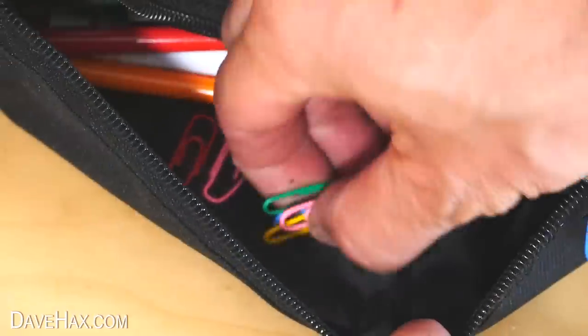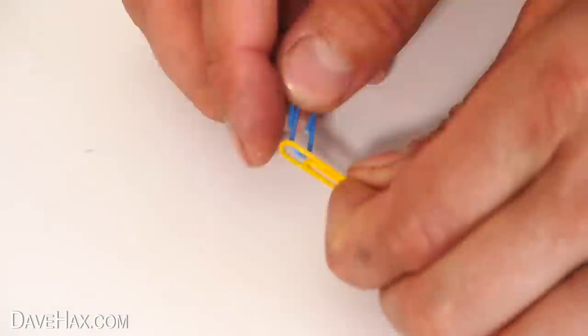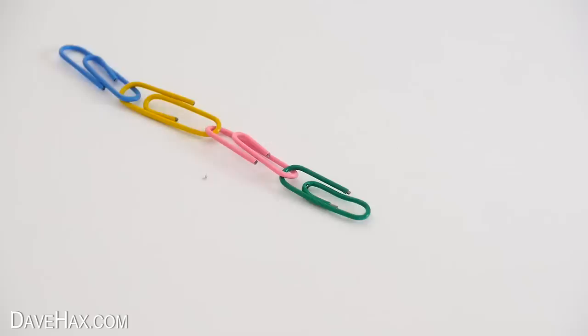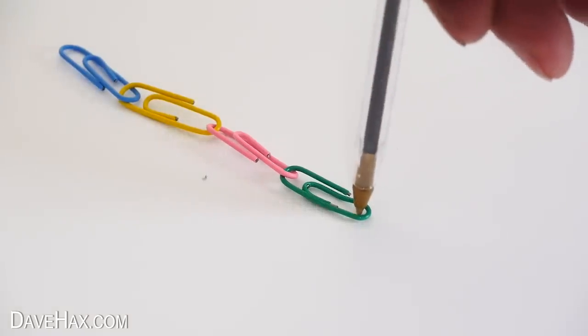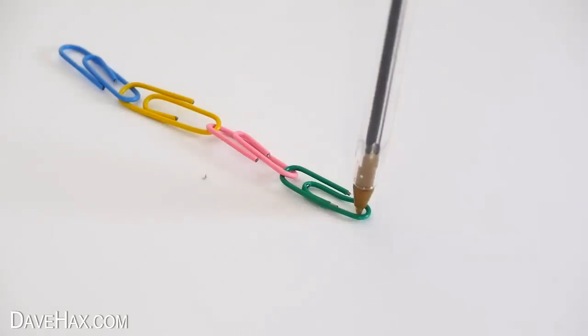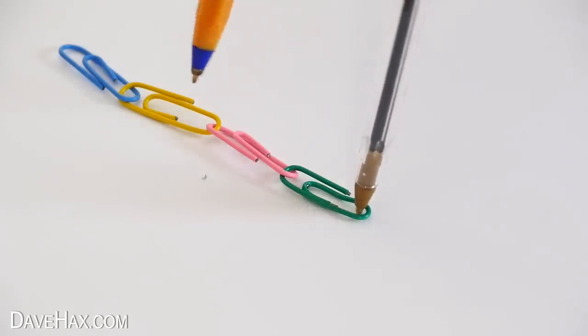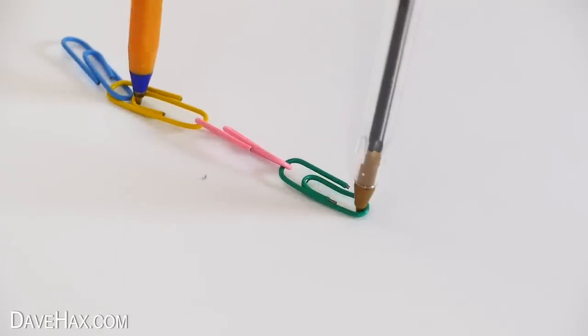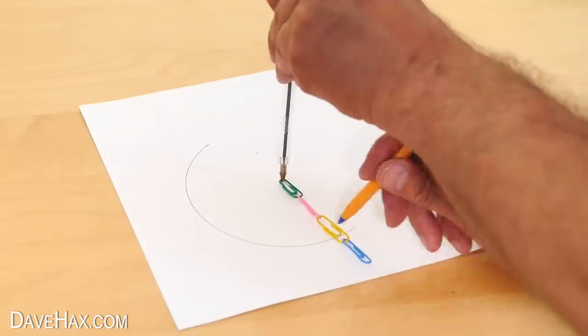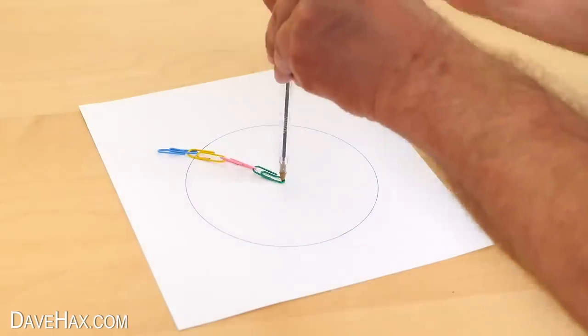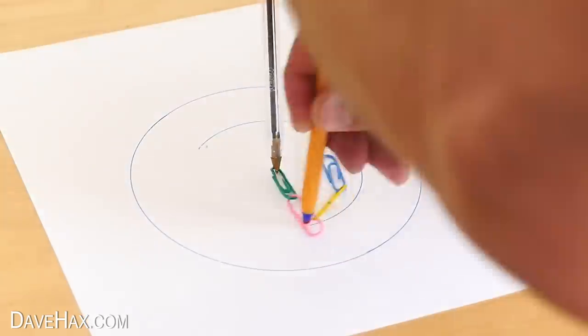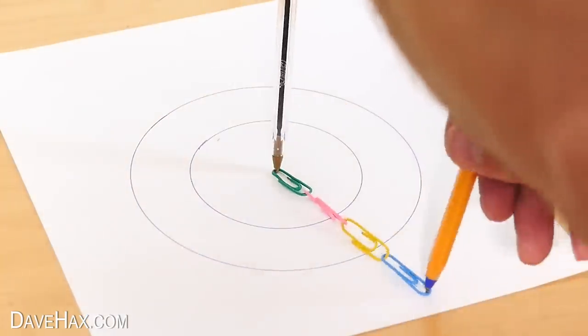If you link a few paper clips together like this to make a chain, you can use them to draw a circle. Take two pens, put one in the end like this, then depending how big you want the circle, you can select what point you put the other pen in. Then pivot the second pen around the first to draw yourself a circle, and you can use different paper clips for different circle sizes.